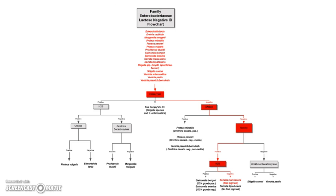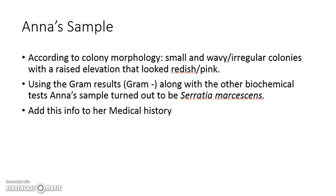Let's summarize. According to the plates we did in activity 513, Ana's colony morphology showed small and irregular colonies with a raised elevation that looked slightly reddish pink. Using the gram staining results from activity 514, we found that Ana's gram stain showed negative pinkish-red colored bacteria. That, along with the biochemical tests we just went over, led us to confirm that Ana's urinary tract infection was indeed caused by the bacteria Serratia marcescens. Please open up your 511 medical history and add those three pieces of information — her morphology, her gram results, and her biochemical test results — to the medical history, and summarize your findings about Ana Garcia's urinary tract infection being caused by Serratia marcescens. That's the end of activity 515, biochemical tests.